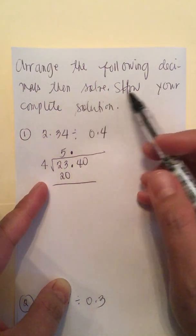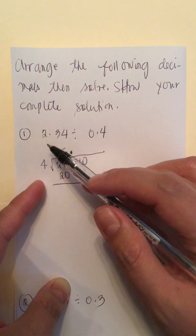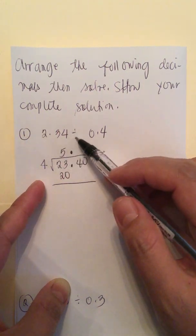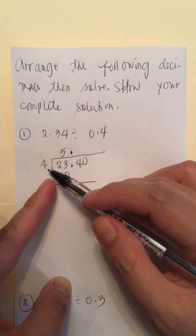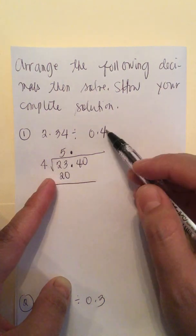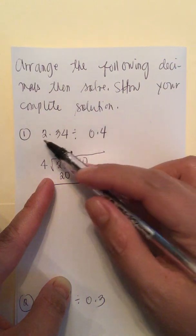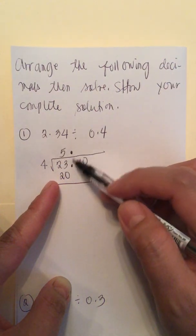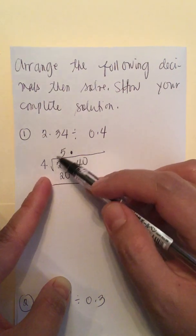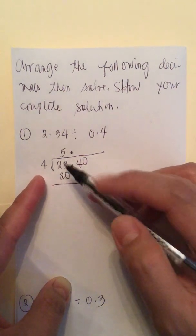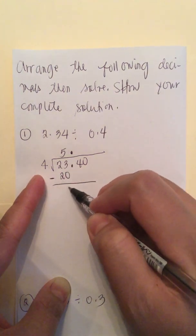Arrange the following decimals then solve — show your complete solution. So 2.34 divided by 0.4. We multiply by 10, so 0.4 becomes 4 and 2.34 becomes 23.40. We put the decimals in the same place. Then 23 divided by 4 is 5, 5 times 4 is 20, then we subtract: 23 minus 20 is 3.